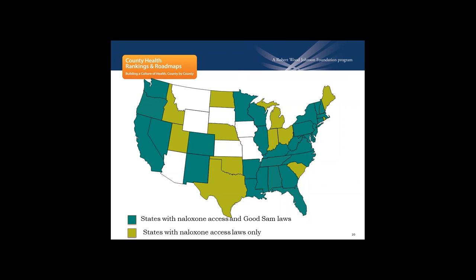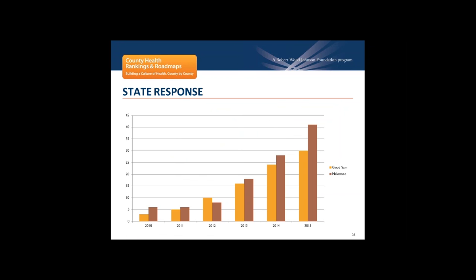An attendee notes that Utah does now have a Good Samaritan law — things are moving along and keeping up with the changing data. These laws have been adopted in big states, small states, rural states, urban states, red states, and blue states. The epidemic doesn't follow state boundaries, and states have overwhelmingly tried to address that by passing these laws. There's been a real uptick in Good Samaritan laws and naloxone access across the country.